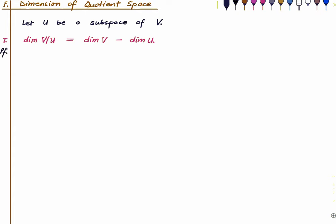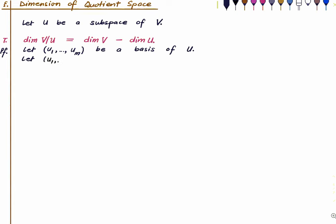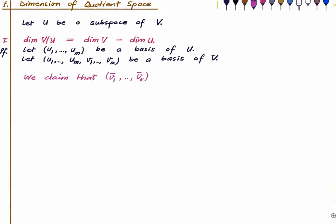The proof is also very simple. Pick a basis for U. We have a basis for the subspace, and by the extension theorem recalled at the beginning, we can extend this to a basis of V, since these vectors are linearly independent. So we can find vectors v₁ up to vₖ such that the appended list is a basis for the parent space V. The claim is that the cosets v₁-bar up to vₖ-bar form a basis of the quotient space V-bar.